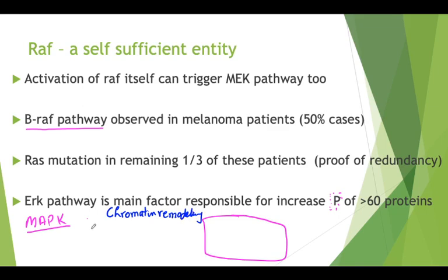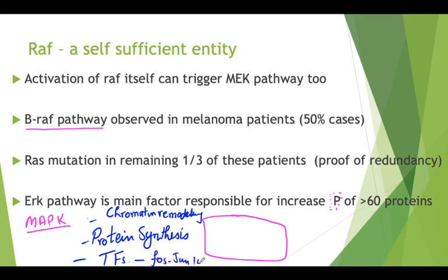The first property of MAP kinase signaling is chromatin remodeling. The second property is protein synthesis. There are also a range of transcription factors induced — we can remember FOS and JUN, which are responsible for immediate early genes upon serum starvation. FOS and JUN are released and lead to cell proliferation phenomena.